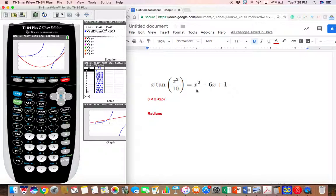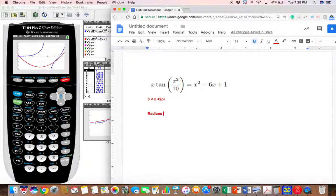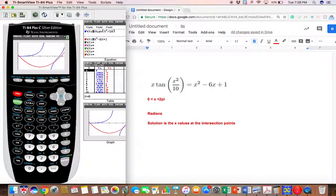Our solutions are the x-values at the intersection points. Why are we only interested in the x-values and not the y-values? Well, if you take a look at our equation, there is no y—it's just x. So we want to see what x is where these two things meet. To find our intersection points, we go to second trace.